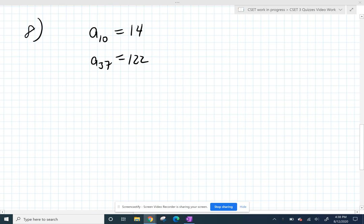I promised you I'd do this one a little bit faster, so let's do that. So from 14 to 22, we jumped 108, and from 10 to 37, we had 27 jumps to do that in. So our common difference - we spanned that gap of 108 in 27 jumps, so we must have been adding 4 every time. So my common difference is 4.